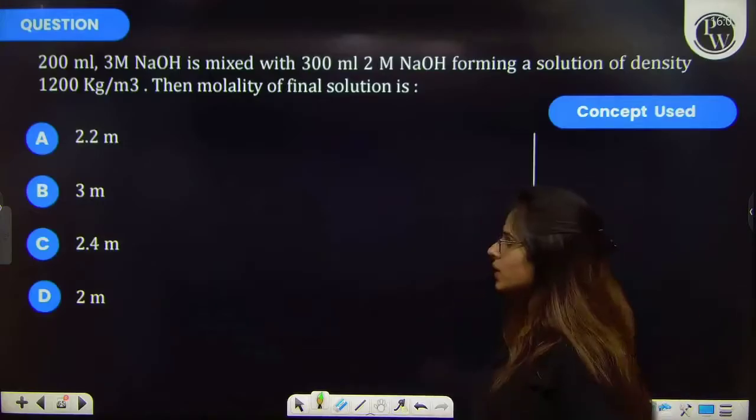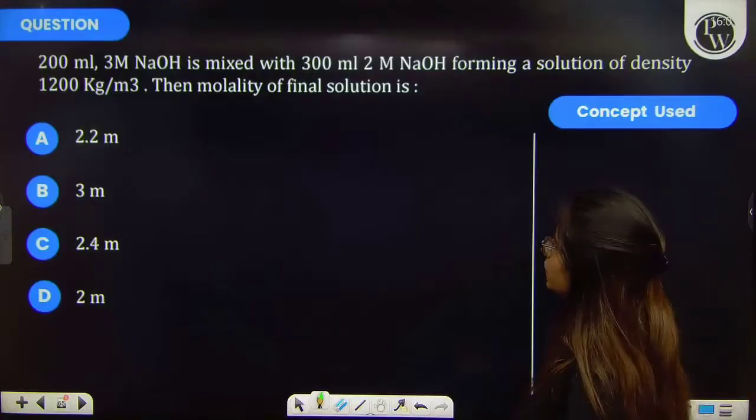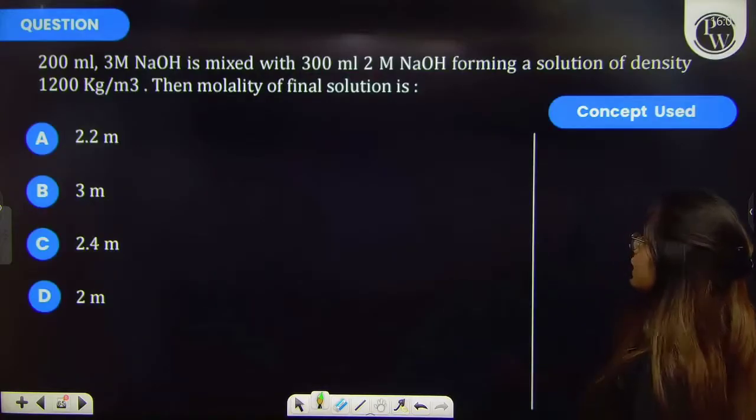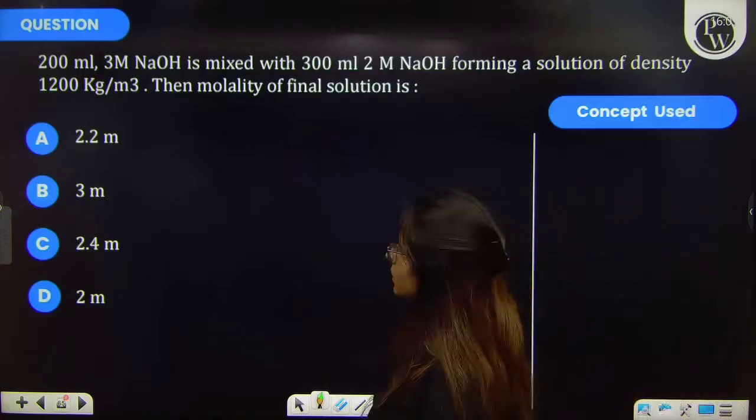Let's see this question. The question says that 200 ml 3 molar NaOH is mixed with 300 ml 2 molar NaOH forming a solution of density 1200 kg per meter cube.